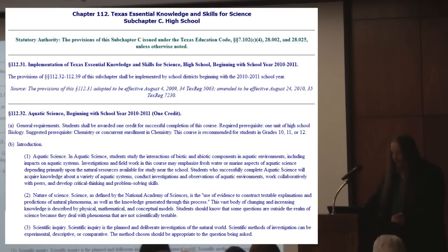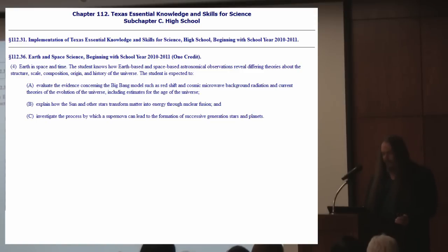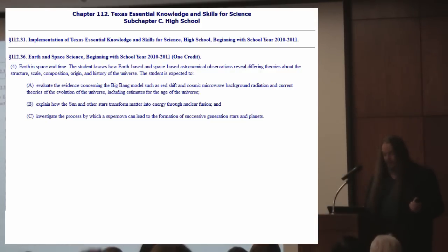In high school, the lesson plan introduces astronomy and geology combined under one heading, Earth in Space and Time, wherein the student knows how Earth-based and space-based astronomical observations reveal differing theories about the structure, scale, composition, origin, and history of the universe. The student is expected to evaluate the evidence concerning the Big Bang model, such as redshift and cosmic microwave background radiation, and current theories on the evolution of the universe, including estimates for the age of the universe.